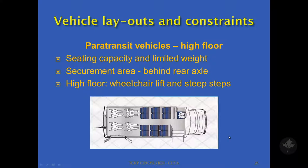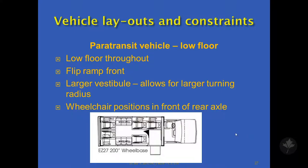Generally with high-floor vehicles, the wheelchair lift is located at the back and the seating area is also at the back. There are vehicles where the entrance is adjacent to the front door steps, with the lift area and securement area between the front and the rear axle. We highly recommend this configuration because if you have the wheelchair space behind the rear axle, people sitting in that position are exposed to quite high vertical accelerations. So if someone is already frail, it could be very much a problem.